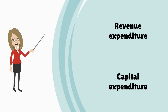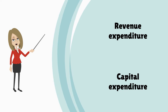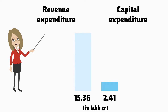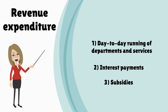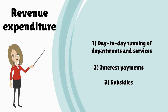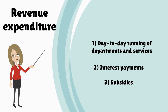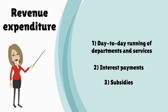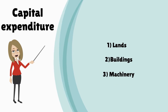Both plan and non-plan expenditure are divided into two broad components: revenue expenditure and capital expenditure. Rupees 15.36 lakh crore is India's budgeted revenue expenditure, and rupees 2.41 lakh crore is India's budgeted capital expenditure for 2015-16. Revenue expenditure is spent on the day-to-day running of departments and services, and the government also spends money on interest payments, subsidies, and other such overheads.